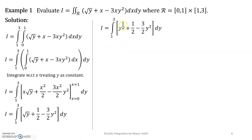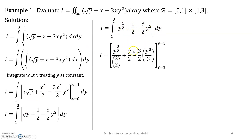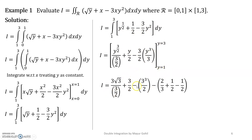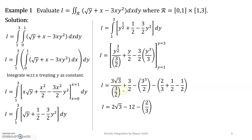Now √y can be written as y raised to the power one-half. You integrate the resulting function with respect to y. On integration you get the expression, and solving it gives i = 6√3 − 38/3.